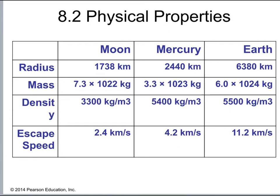The last property in the table is escape speed, which relates to whether these bodies can hold on to an atmosphere. The molecules of air move at different speeds, and a planet needs enough gravity to prevent air from escaping. The Moon's escape speed is 2.4 km/s, Mercury's is 4.2 km/s — both relatively low because they are smaller and less massive objects. The Earth's escape speed is 11.2 km/s, more than double Mercury's and nearly five times that of the Moon.